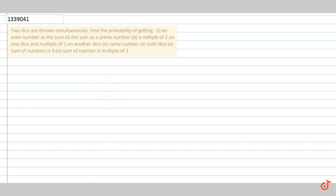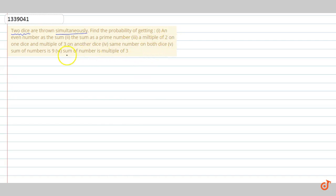The question says that two dice are thrown simultaneously. Find the probability of getting an even number as the sum, the sum as a prime number, a multiple of two on one dice and multiple of three on another dice, and so on.